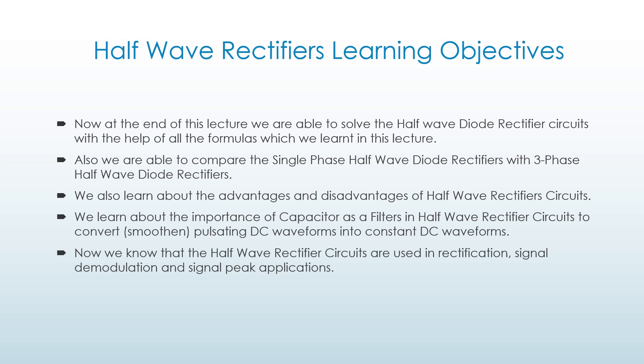At the end of this lecture, we are able to solve half wave diode rectifier circuits using all the formulas learned. We are also able to compare single-phase half wave diode rectifiers with 3-phase half wave diode rectifiers, and we have learned about their advantages and disadvantages. We also learned about the importance of a capacitor as a filter in half wave rectifier circuits to convert pulsating DC waveforms into constant DC waveforms. Half wave rectifier circuits are used in rectification, signal demodulation, and signal peak applications.